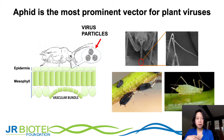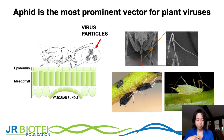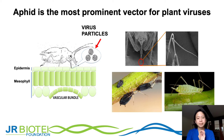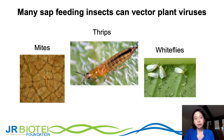Aphids have a specialized mouthpart for feeding, like a long thin needle, which makes them an ideal insect to transmit viruses. Their feeding activity does not cause a lot of damage to the leaf, so it doesn't trigger extensive plant defense responses. When they feed they often go deep straight into the vascular bundle — the xylem and phloem — facilitating virus transmission, as those vascular bundles run through the entire plant. Other sap-feeding insects also transmit plant viruses, such as mites, thrips, and whiteflies.